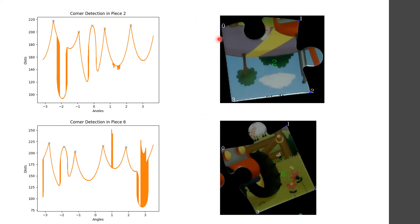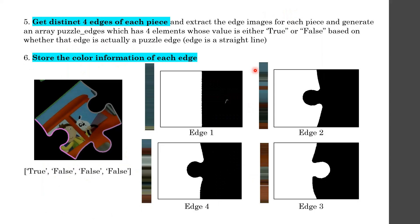The leftmost and topmost pixel among the detected peaks is assigned corner number 0, and the remaining corners are numbered in clockwise order. Once I have the corner information, I divide the Canny-detected edges into four distinct edge images, since one edge lies between two corners. The angle formed by two corners with the centroid defines the range, and all edge points within that angular range belong to the corresponding edge.